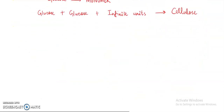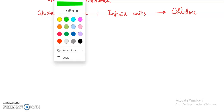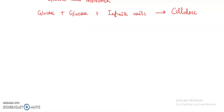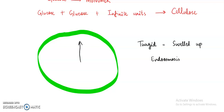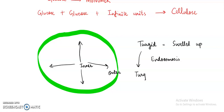We have already discussed turgor pressure in our past videos when we were talking about endosmosis and exosmosis. Whenever a cell becomes turgid — a turgid cell is one that has swelled up — whenever a cell does endosmosis it becomes turgid. When a cell becomes turgid it applies pressure from the inner side to the outer side, and that pressure is known as turgor pressure.